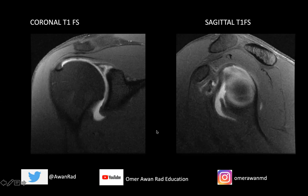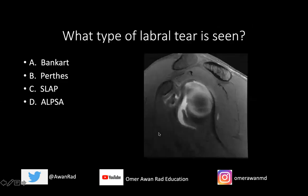The question I have for you is: what type of labral tear are we seeing here? Is this a Bankart tear, a Perthes type of labral tear, a SLAP tear, or an ALPSA lesion? This will test your understanding of the alphabet soup of shoulder imaging.